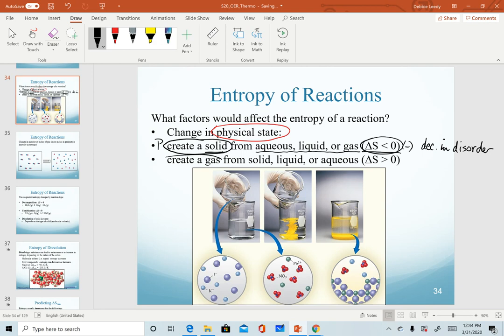On the other hand, if we create a gas as a product when we've started with a solid, liquid, or aqueous, here we predict a positive change in entropy. Again, we've started with more ordered substances and we've produced a very disordered or very chaotic or random motion gas, and so for this we predict an increase in disorder.